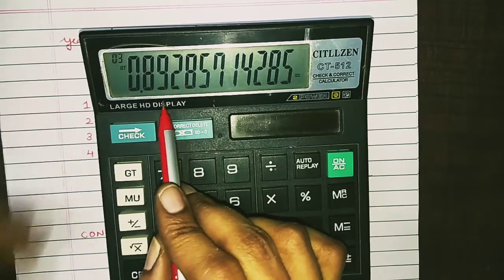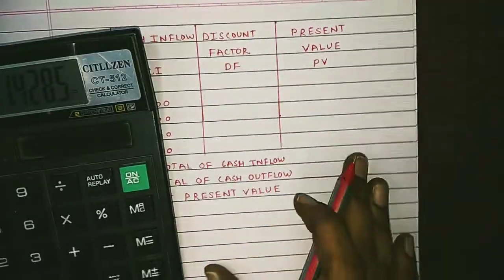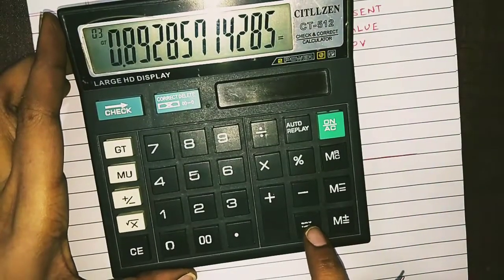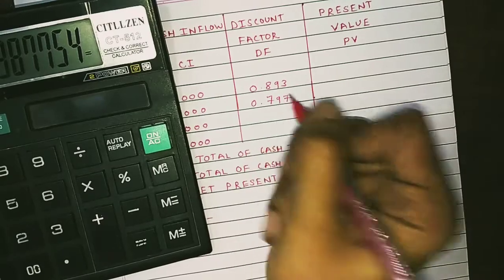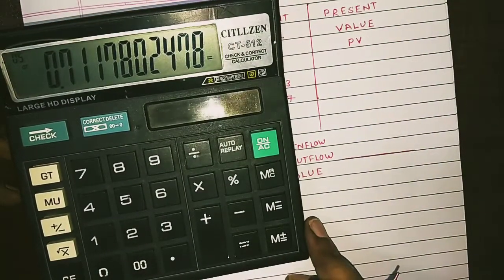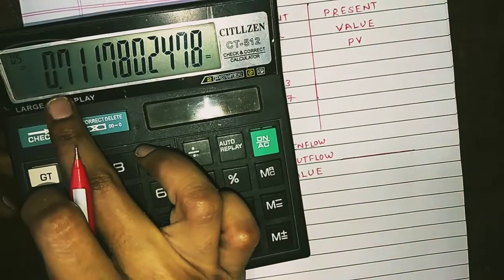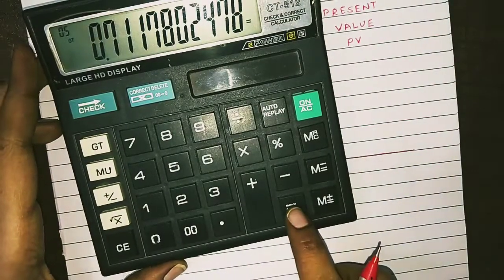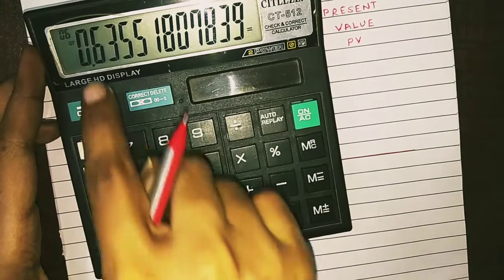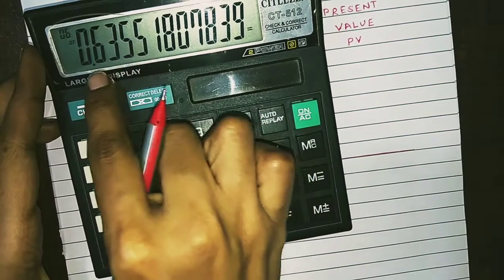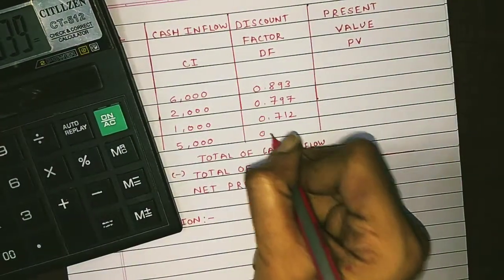For year one the discount factor is 0.893. For year two the discount factor is 0.797. For year three the discount factor is 0.712. For year four the discount factor is 0.636 — the fourth digit is 5, so we round up to 0.636.